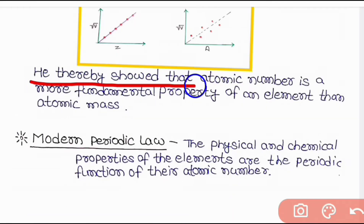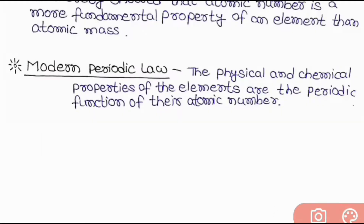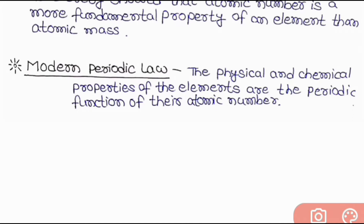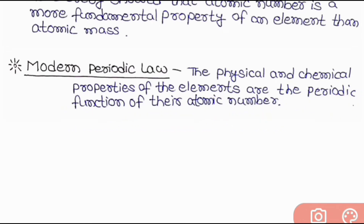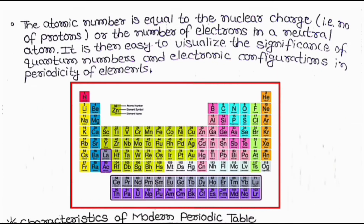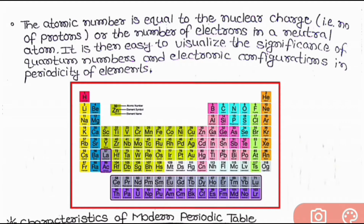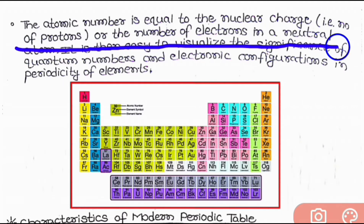He thereby showed that the atomic number is a more fundamental property of an element than atomic mass. Now let us come to the modern periodic law. The modern periodic law states that the physical and chemical properties of the elements are the periodic function of their atomic number. The atomic number is equal to the nuclear charge, that is, the number of protons or the number of electrons in a neutral atom.